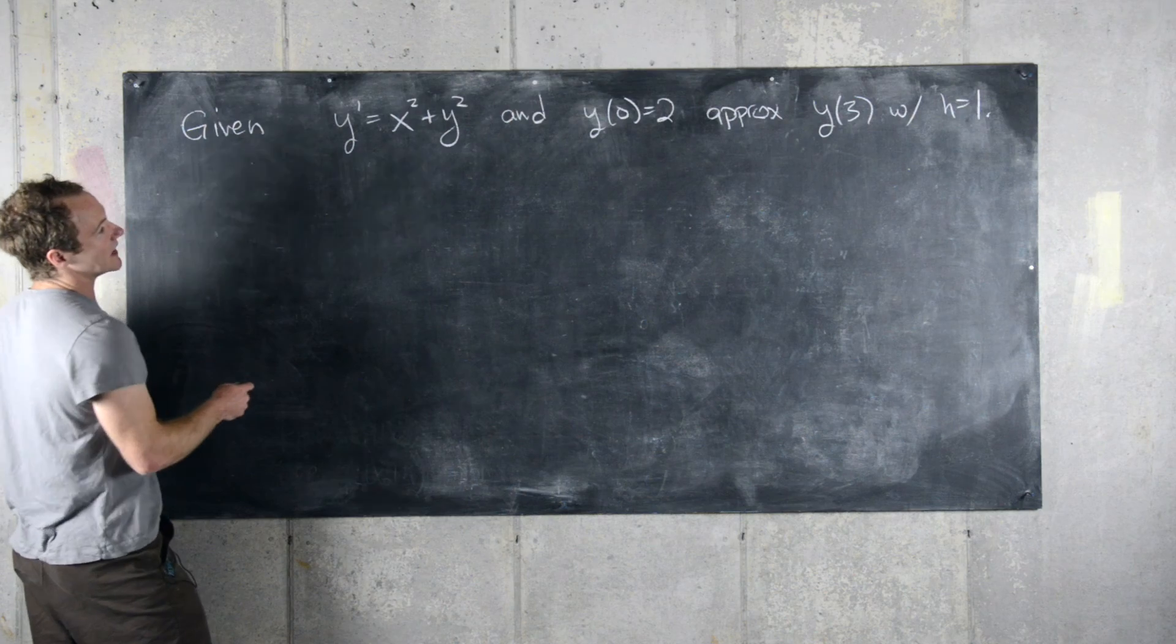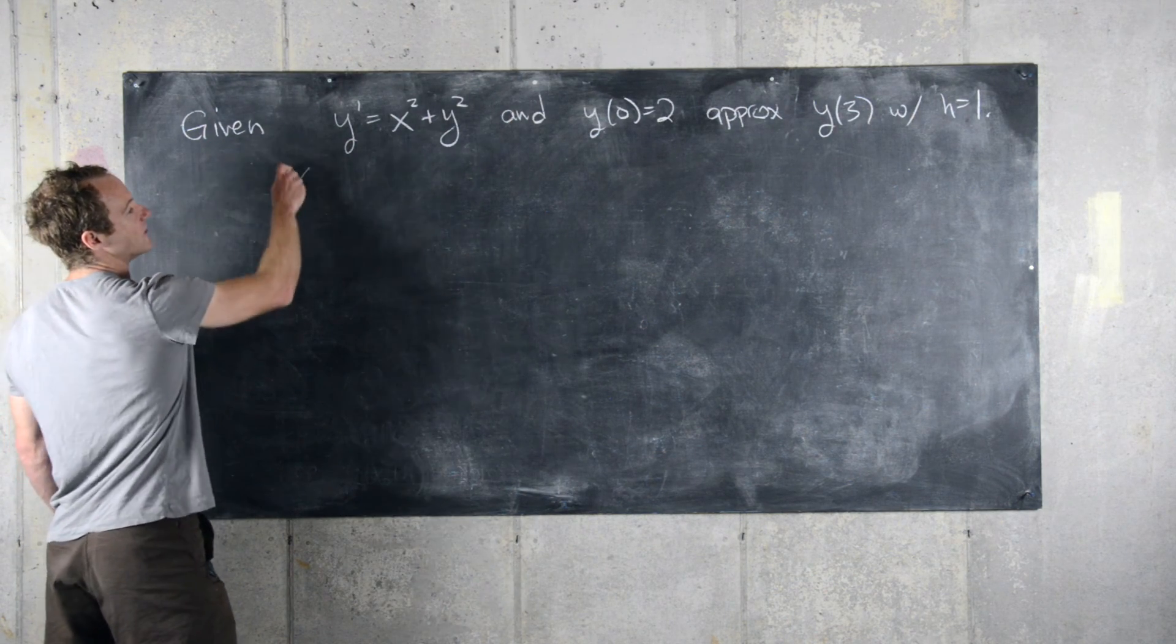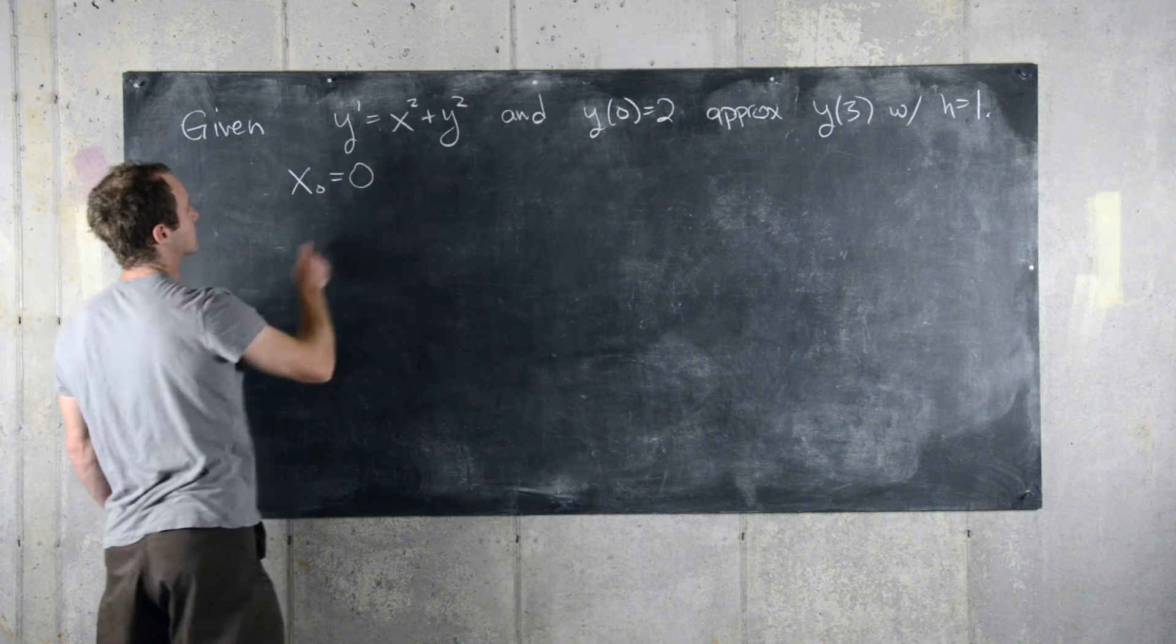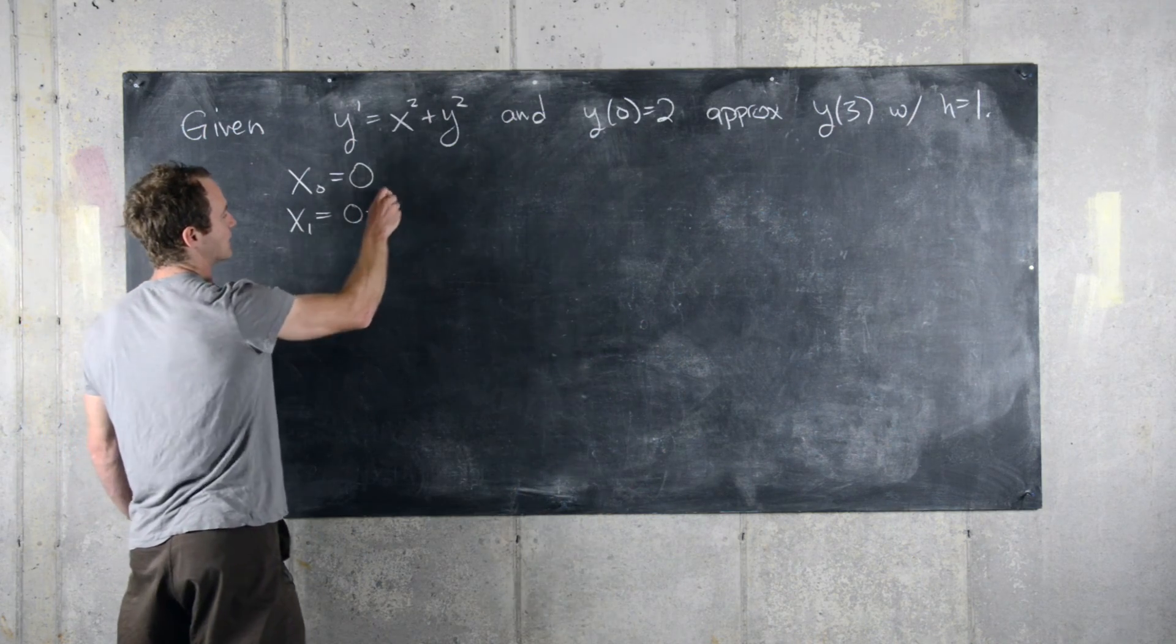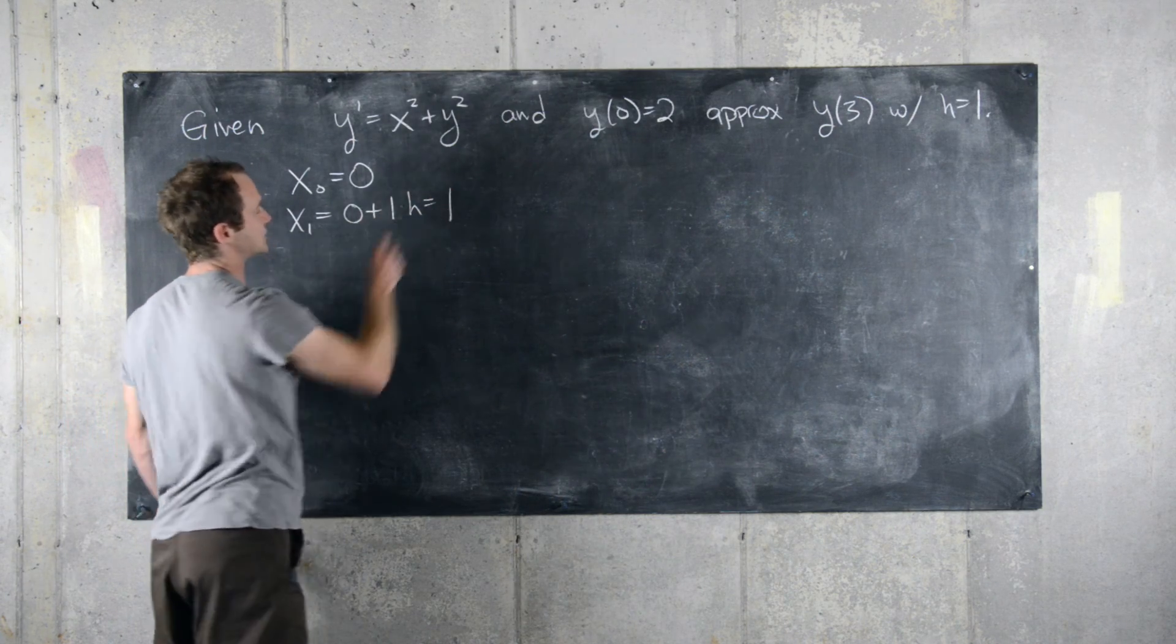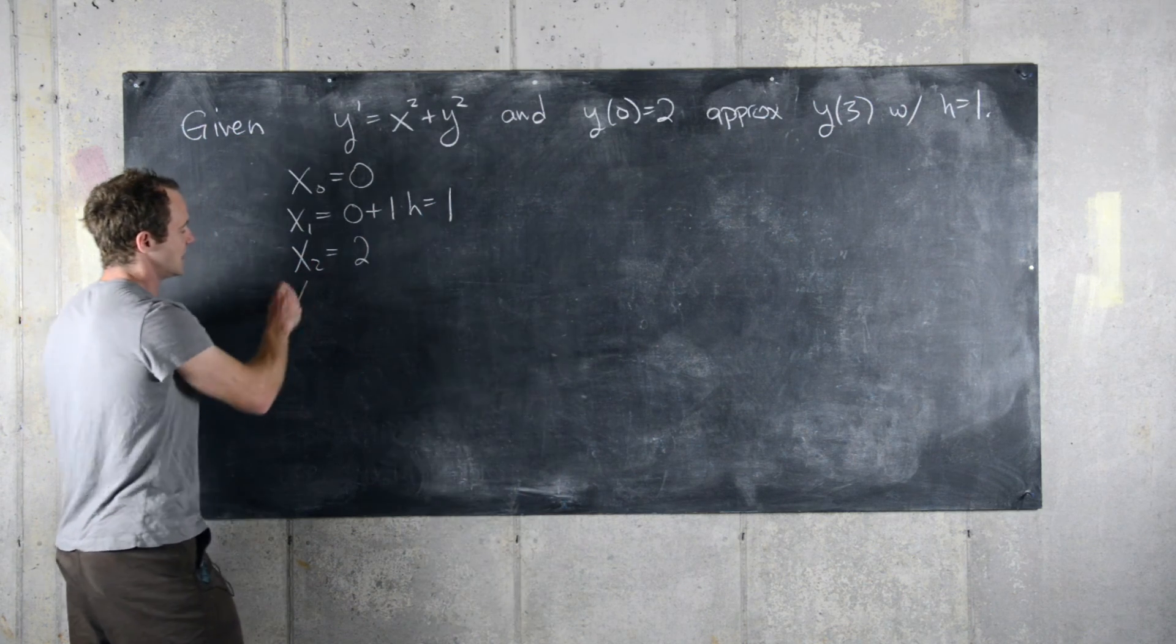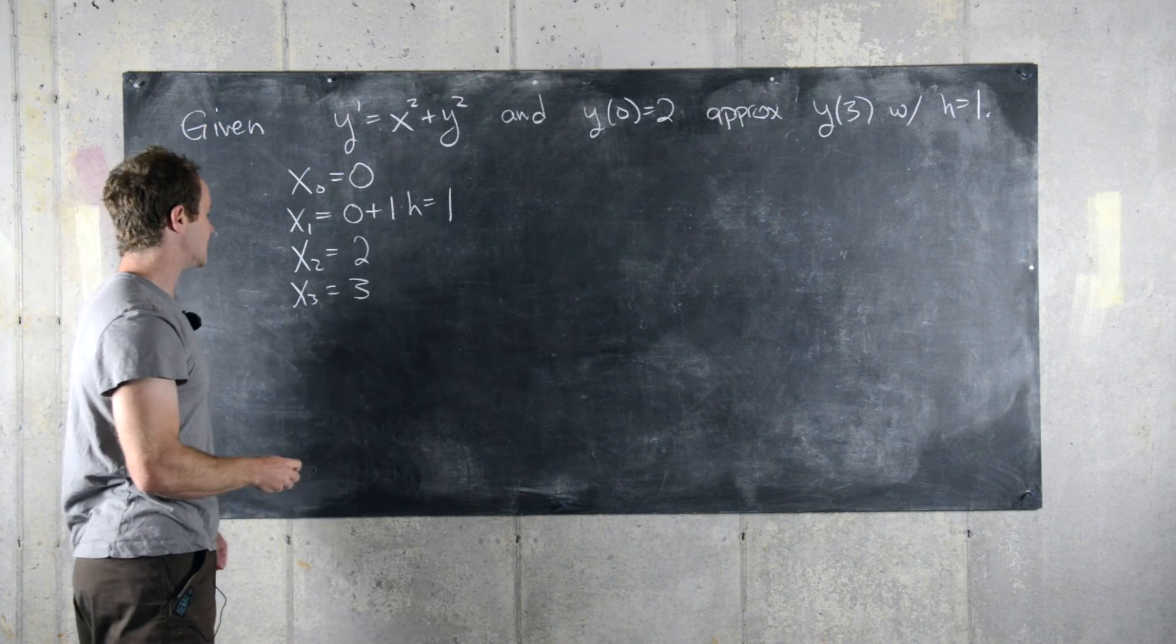So in our general setup, we know that x of zero will be equal to zero, x of one will be equal to zero plus one times h, so that's just equal to one, x of two will be two, x of three will be three.